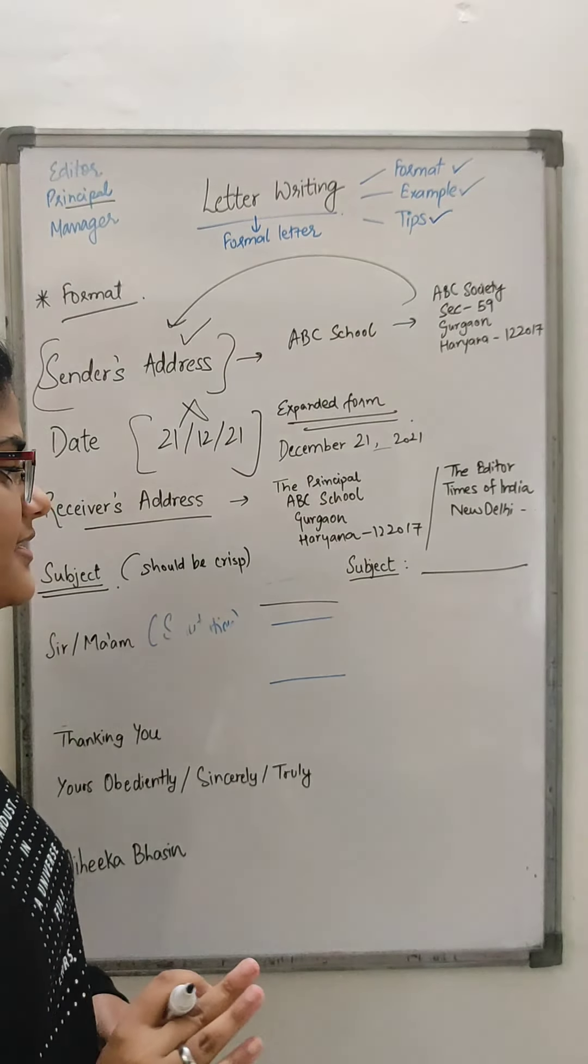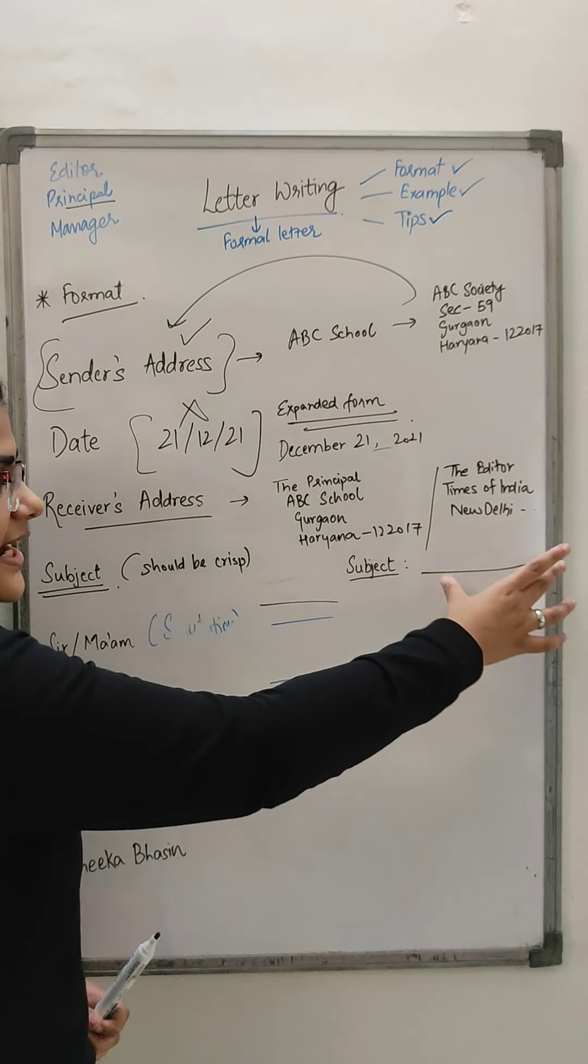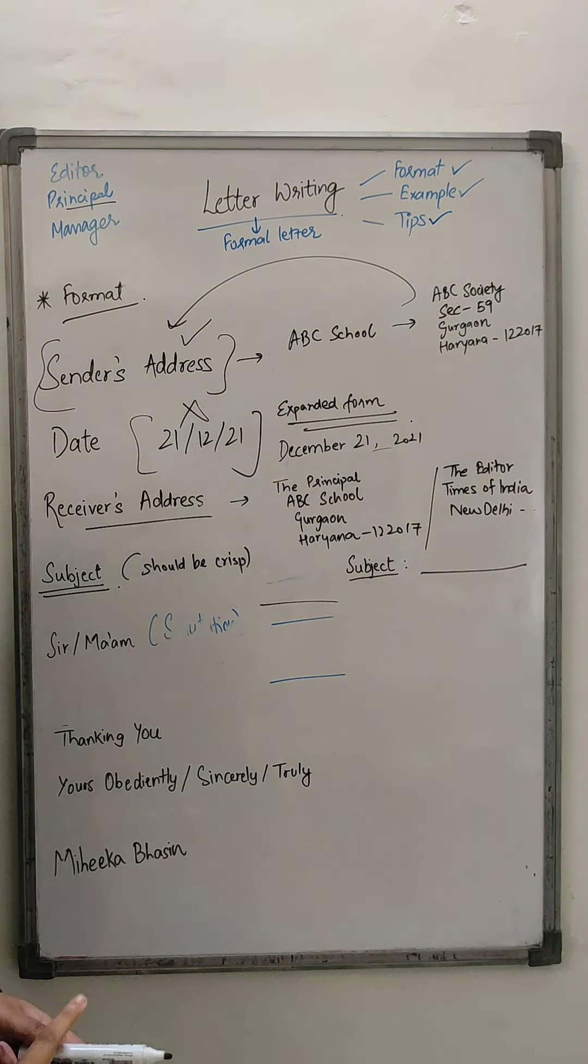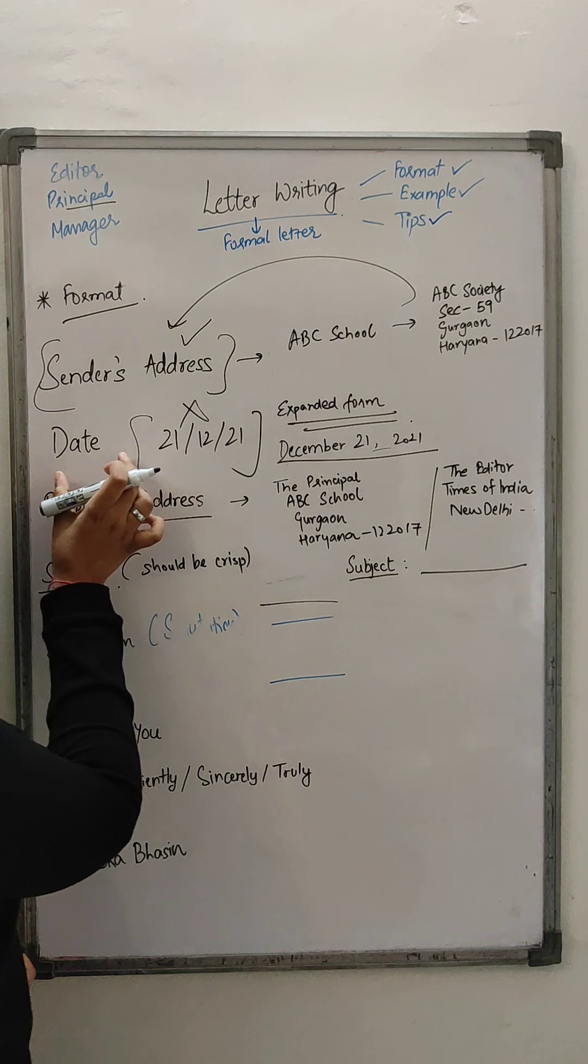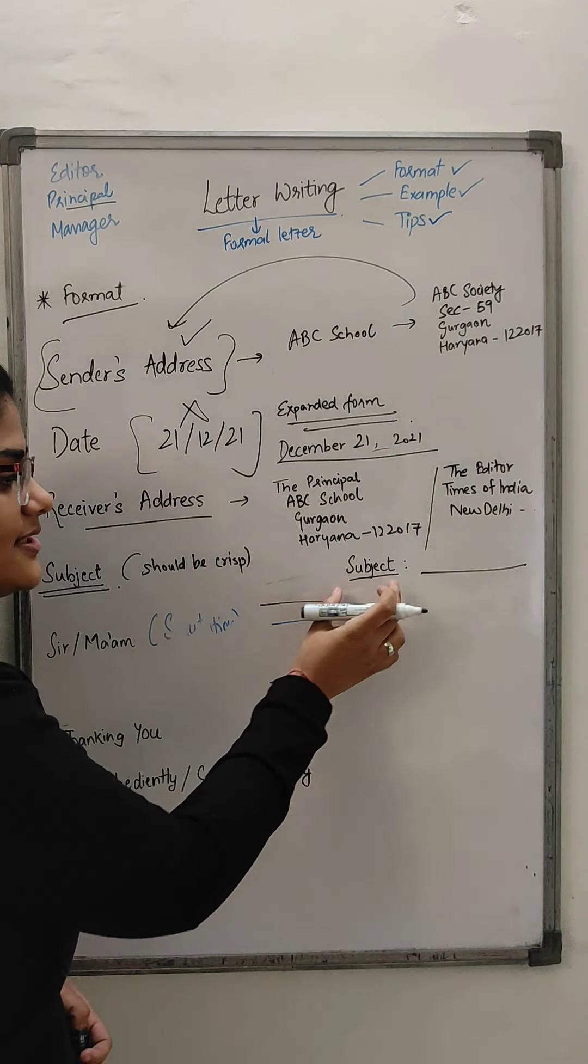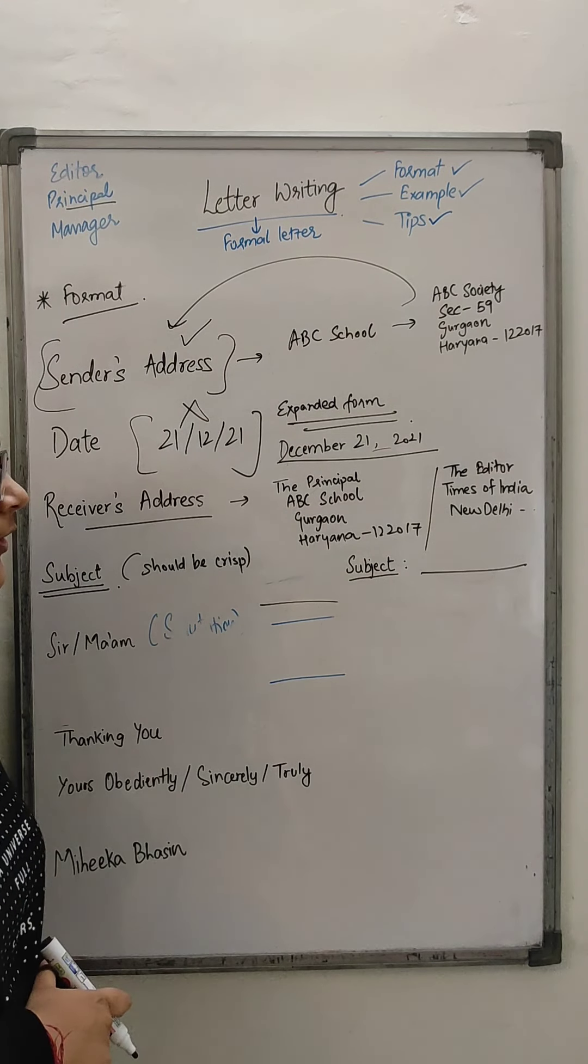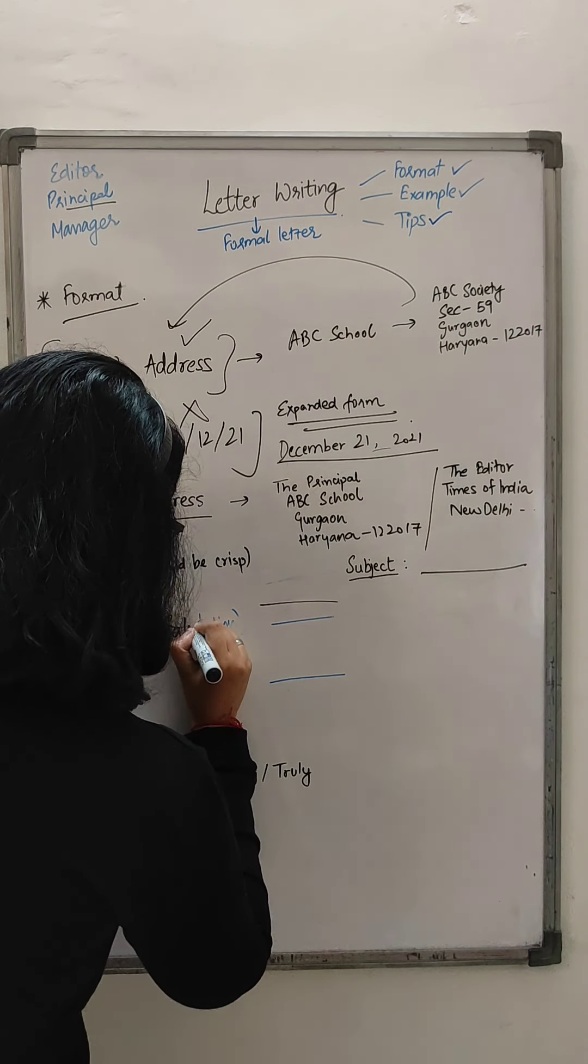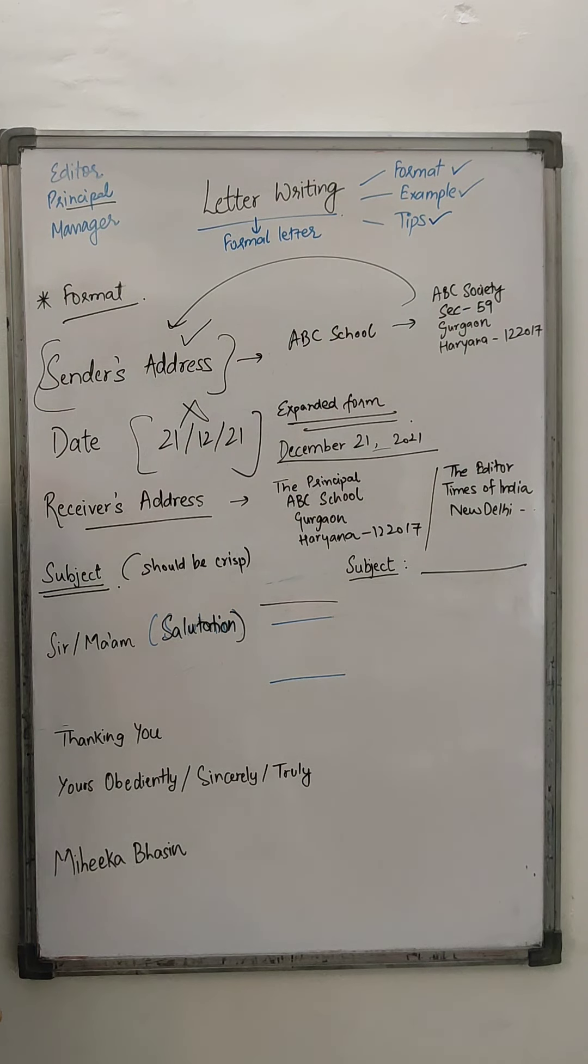To the colon and then you write your subject. Now, I don't mean to say that the subject that you write has to be underlined. No, the word subject should be underlined. Now, having said this, one more misconception is that most students think that we have written the word subject and then we write the sentence, that means we should also write the word date and then write the date. No, in the letter, after the sender's address, you directly write the date. You don't need to write the word date. But when it comes to your subject, you need to write the word subject, underline it, put a colon and then write the statement, the subject statement.